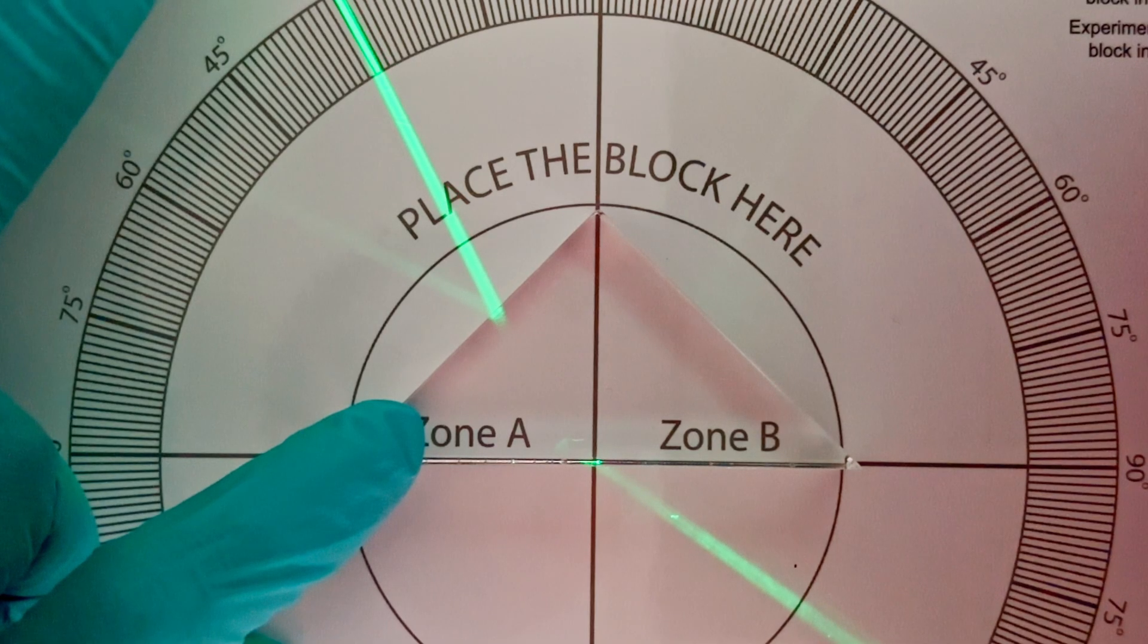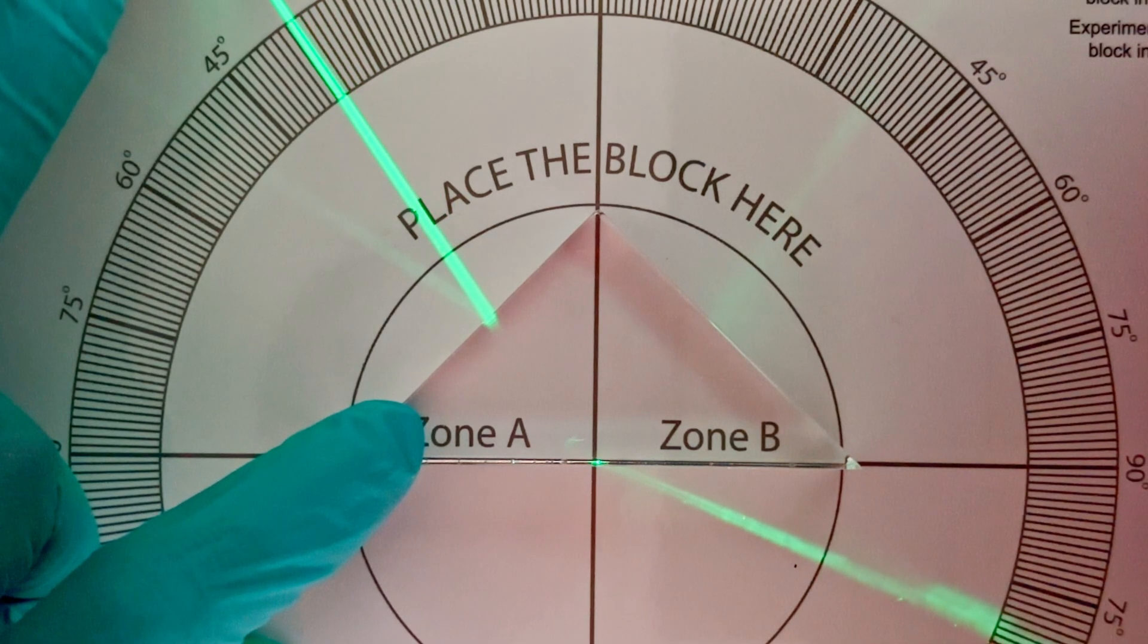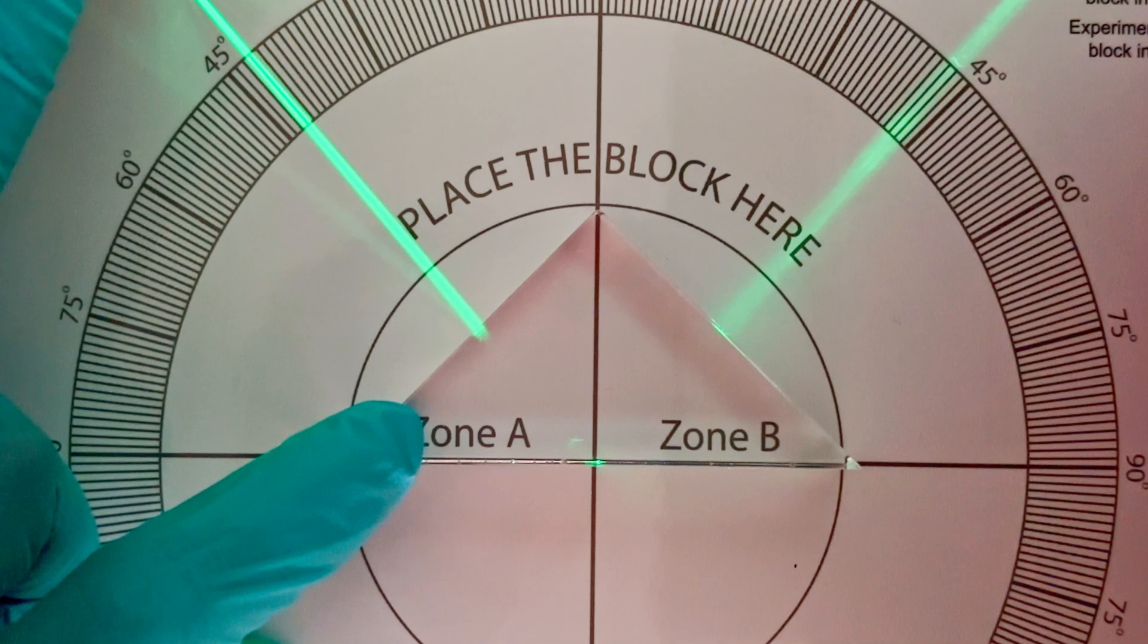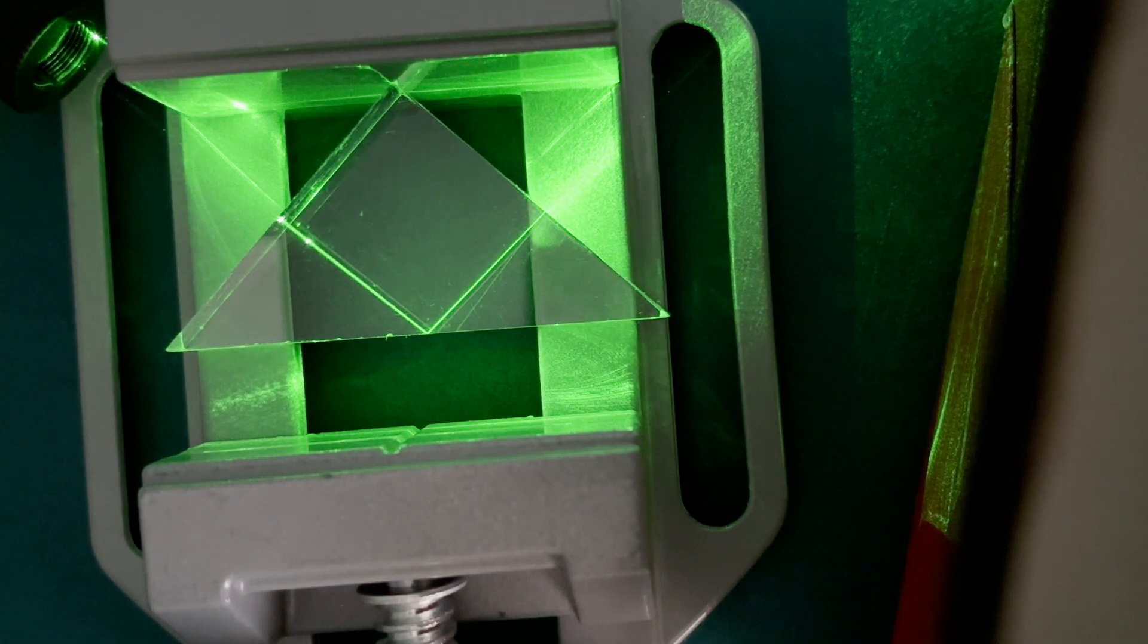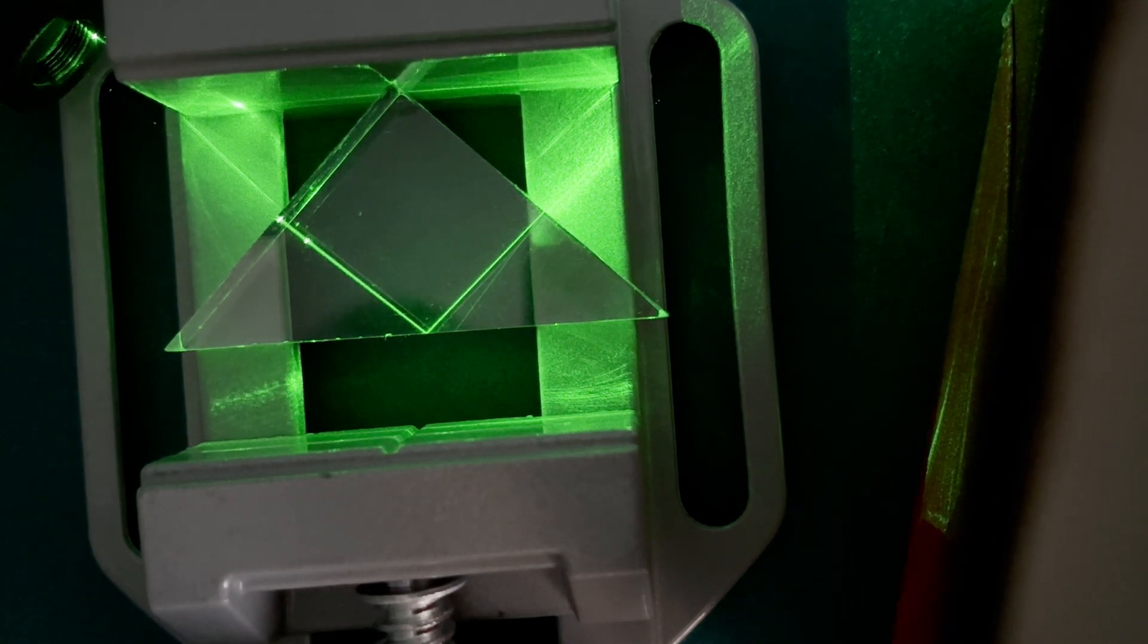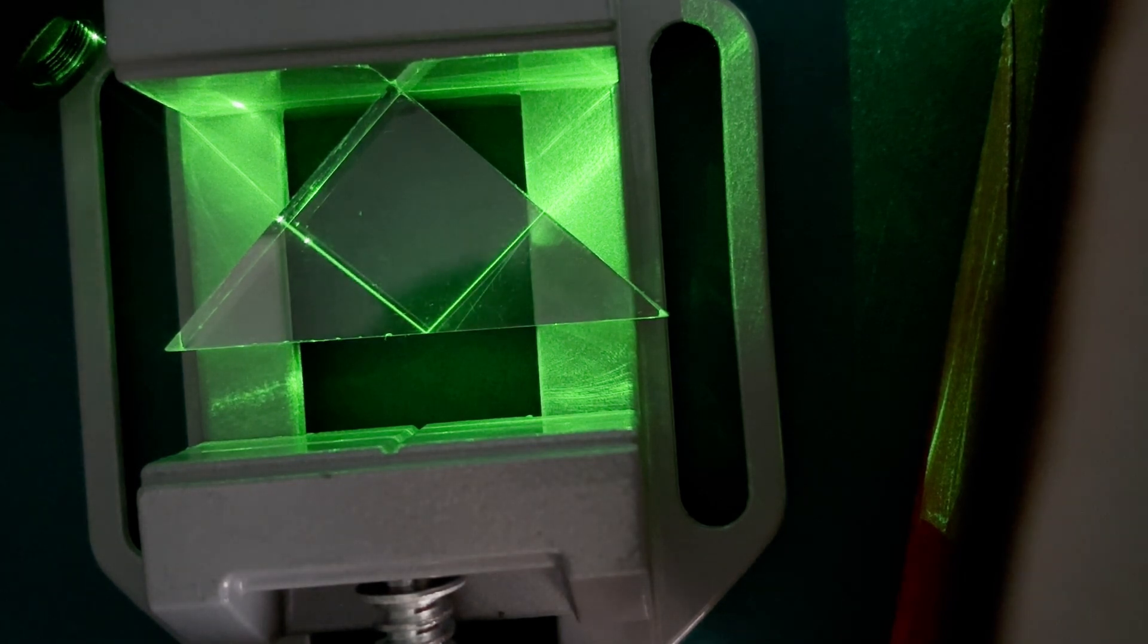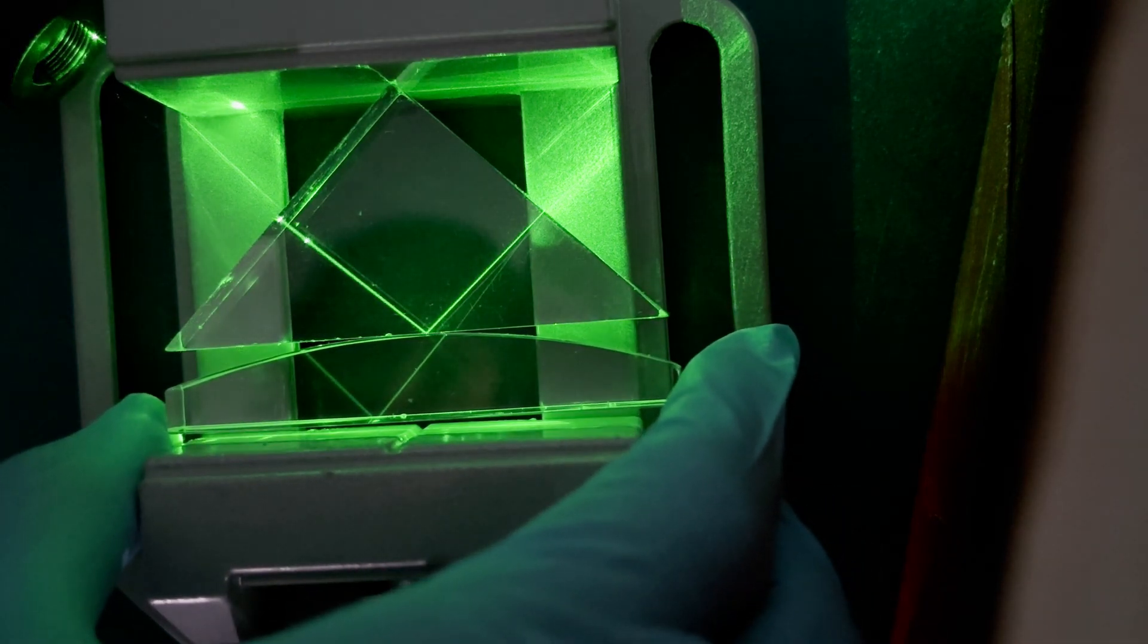For light traveling from a medium of higher refractive index like acrylic to a medium of lower refractive index like air, there is a specific angle of incidence called the critical angle beyond which it experiences total internal reflection. The critical angle for acrylic-air interface is about 42 degrees. Therefore, as expected, the light incident at more than the critical angle cannot pass into air from the prism and instead is totally reflected. The air essentially acts as a barrier for the propagation of light under these conditions.